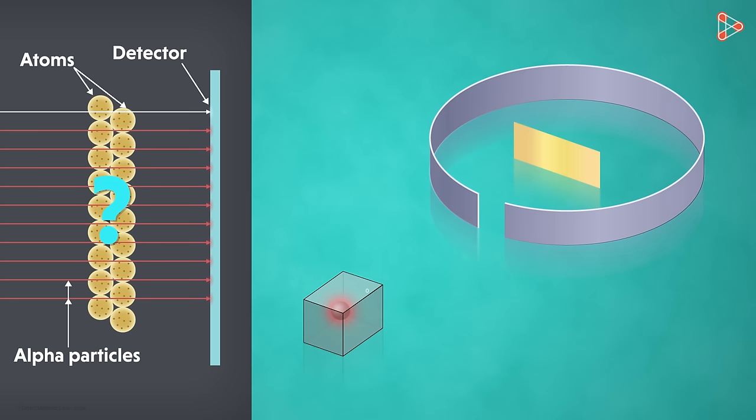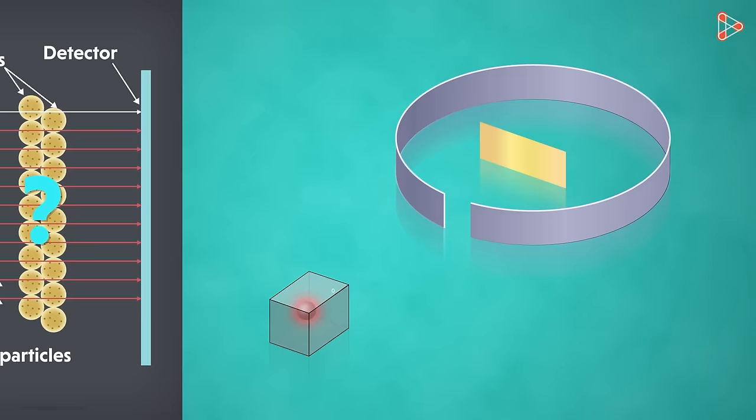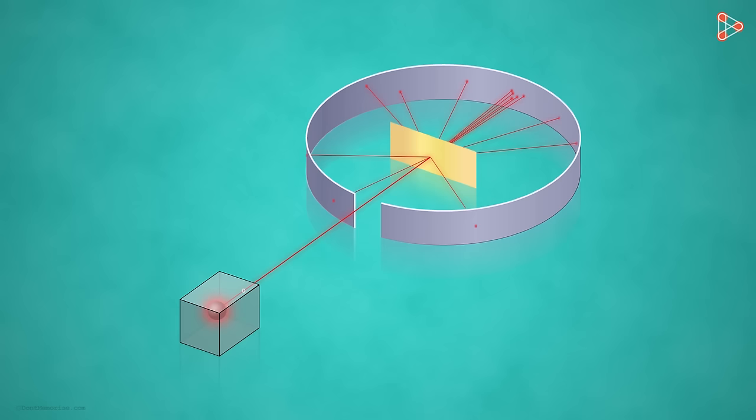But is this what he observed? Not really. He was astonished to get unexpected results. What results did he get? He found that most of the fast-moving alpha particles passed straight through the foil and hit the detector. However, some particles got deflected by small angles. And lastly, to his astonishment, few alpha particles also rebounded.